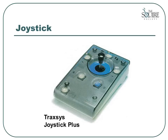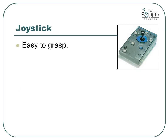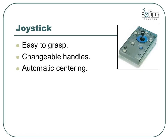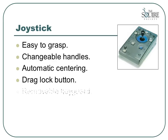The next type of mice we look at are called joysticks. Joystick mice look very similar to the joysticks you may see on a power wheelchair. They are easy to grasp, most have changeable handles, and when you release the joystick it will automatically center. They have a specialized drag lock button built in to assist when highlighting text or moving objects on the screen. Some models also have a removable key guard, similar to the key guard available for keyboards. The joystick mouse can be a good option for someone who experiences a lot of spasms and tremors.